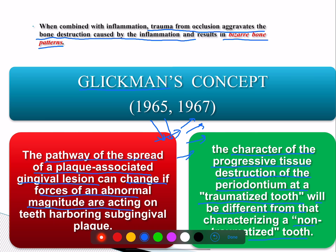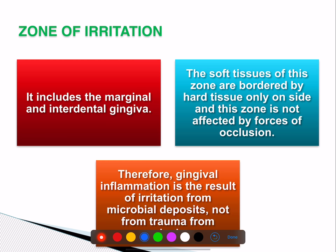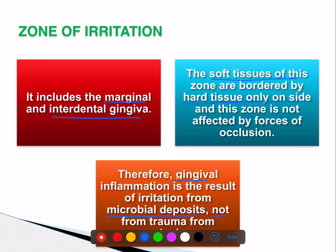Based on studies, Glickman concluded that there are two zones: zone of irritation and zone of co-destruction. The zone of irritation is where bacteria sit and irritate — it is in the marginal and interdental gingiva. The soft tissues of this zone are bordered by hard tissue on only one side. Gingival inflammation here is the result of irritation from microbial deposits, not from trauma from occlusion. Trauma from occlusion does not aggravate bony destruction in this zone.